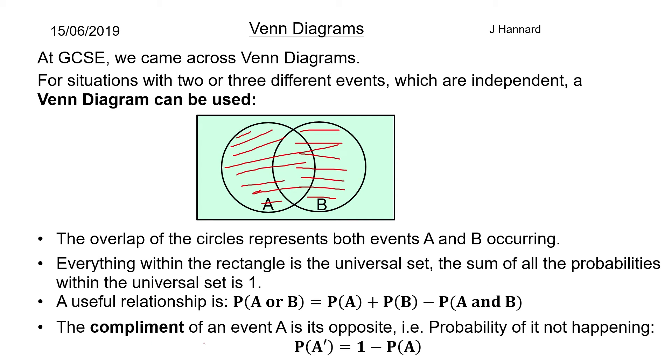The complement of an event A is its opposite, i.e. the probability of it not happening. So we denote that by probability of A dash which equals 1 minus P of A. So if the probability of A happening is 60%, then the probability of A complement is 40%.